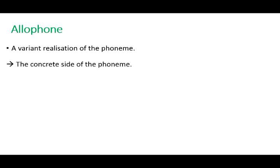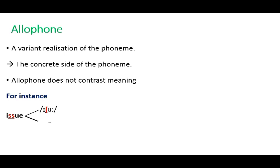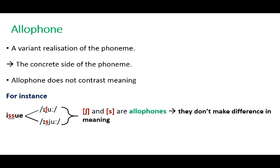Some phonemes can have different realizations depending on the context they occur in, and these realizations are referred to as allophones. An allophone is a variant realization of a phoneme. Unlike a phoneme, an allophone does not contrast meaning — it does not make a difference in meaning. For example, the word 'issue' in English is pronounced as either 'issue' or 'issue'; the sounds 'sh' and 's' are allophones because they don't bring about a difference in meaning. Allophones are usually described using square brackets to indicate these characteristics.